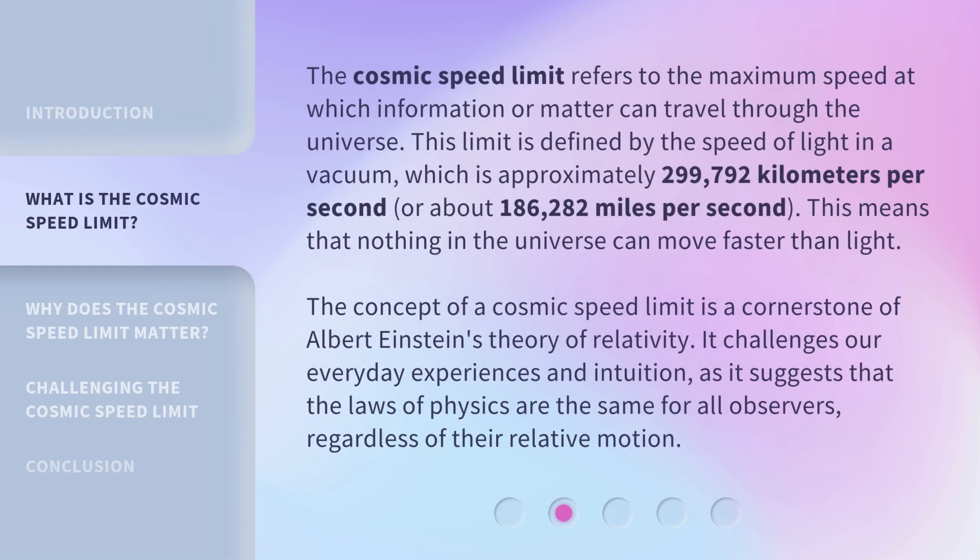The Cosmic Speed Limit refers to the maximum speed at which information or matter can travel through the universe. This limit is defined by the speed of light in a vacuum, which is approximately 299,792 km per second, or about 186,282 miles per second. This means that nothing in the universe can move faster than light.